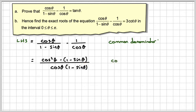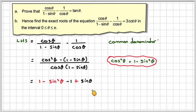Now, cos squared theta happens to be equal to 1 minus sine squared theta. So we'll replace that, and then we're going to have minus 1 plus sine theta over cos theta times 1 minus sine theta. Now, 1 minus 1 will cancel out.